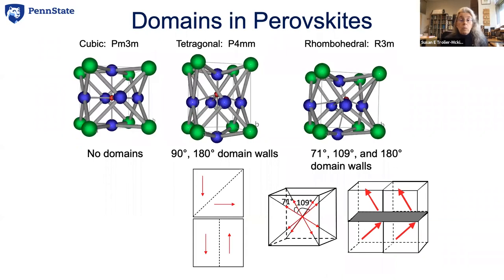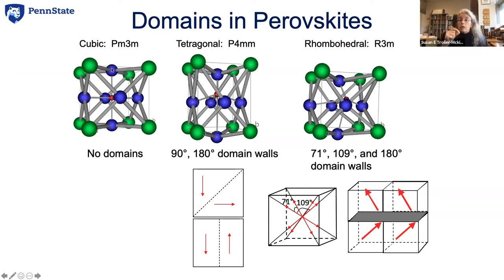There are multiple possible ways these materials can distort. If I start with an atom that had six equivalent oxygen atoms around it and I want to move it close to one of its oxygen neighbors, it could distort by moving up, down, forward, back, left, or right. Those different possibilities are going to produce different domains in much the same way that magnets have domains.